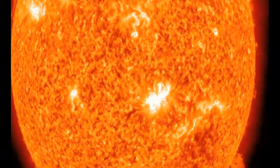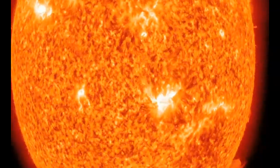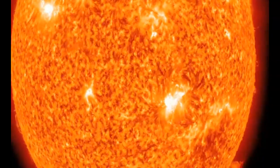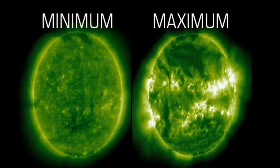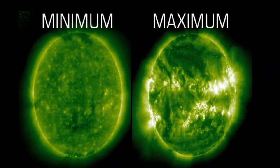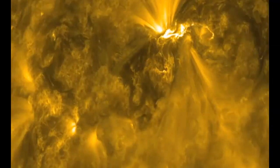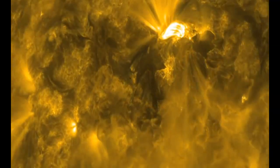Solar flares may seem like faraway events, but they can damage satellites and even ground-based technologies and power grids. Every 11 years as the sun reaches its maximum activity, they become bigger and more common, and that increases the chances that one will significantly affect Earth.